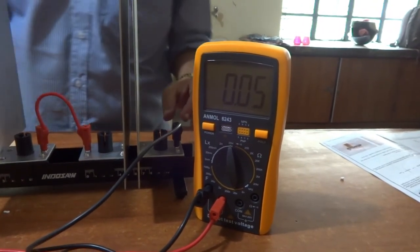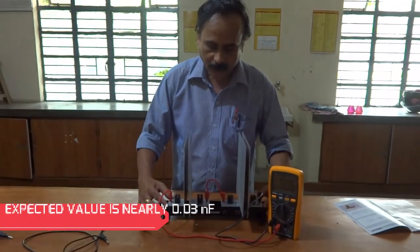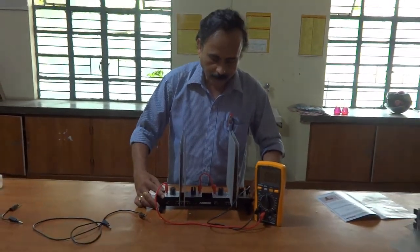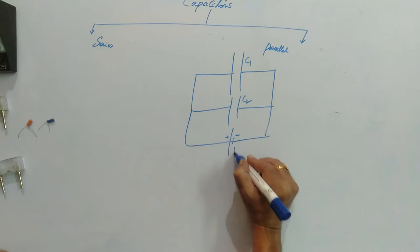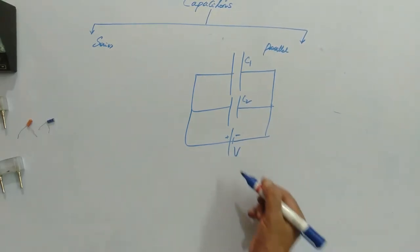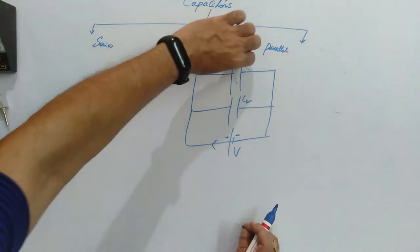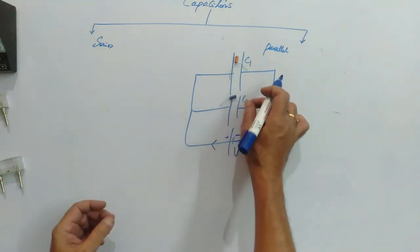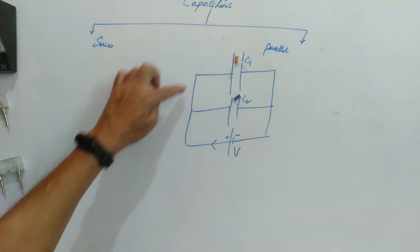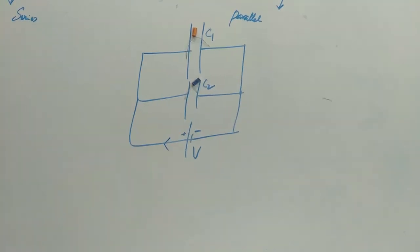When the two capacitors are in series, the net capacitance is lesser than either individual capacitor. This is C1, this is C2, and this is a battery of potential difference V. Now if we place the capacitors with positive and negative plates connected by wires like this, this arrangement represents capacitors connected in parallel.